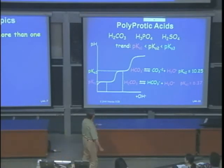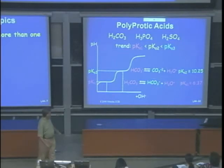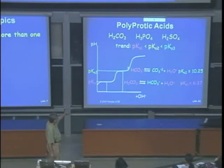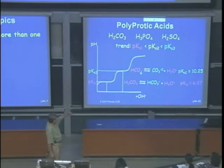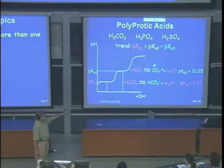The second dissociation: HCO3⁻ + H2O ⇌ H3O+ + CO3²⁻, with pKa2 = 10.25. At pH 10.25, [HCO3⁻] = [CO3²⁻]. At pH 12, the prevalent form is CO3²⁻. This is important for understanding amino acid charges at different pH values.